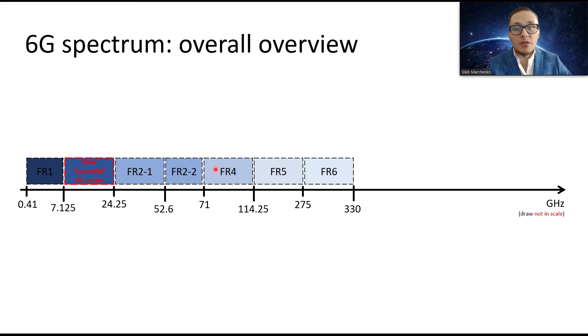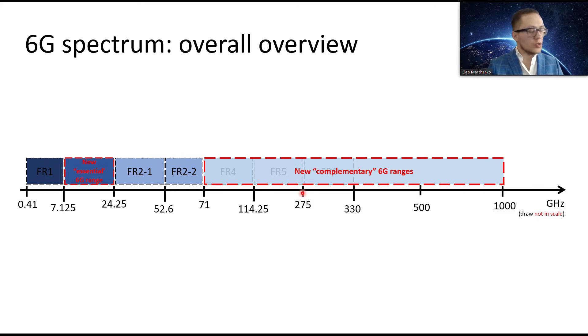Whereas frequency range 4, 5, 6 is considered as a kind of a new complementary 6G ranges only for particular use cases. Not for large coverage, not for extreme coverage applications for wide-range cases. This is maybe only for joint communication and sensing, for accurate positioning, for radars, gesture recognitions, very short communication about 10 meters or 100 meters but with extremely high data rates until one terabit per second.